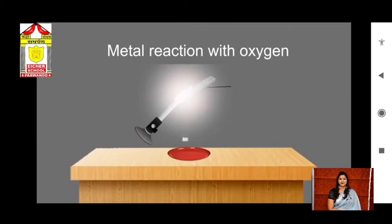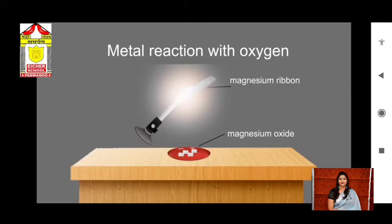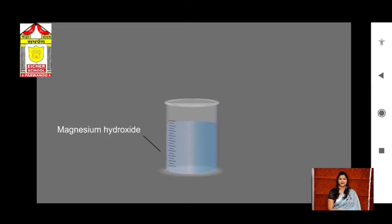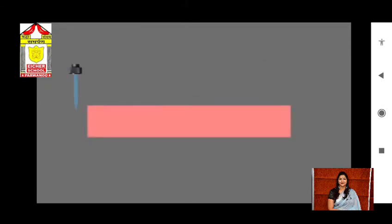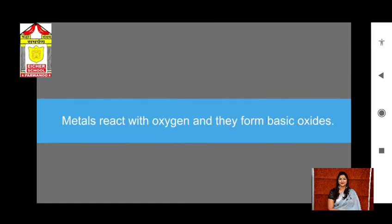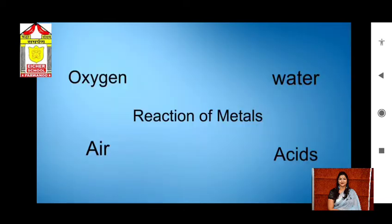When we burn magnesium ribbon in the presence of oxygen it converts into magnesium oxide. When the ashes of magnesium oxide are dissolved in water, it converts into magnesium hydroxide. We can check whether it is acidic or basic with litmus paper. The red litmus paper turns blue, showing that metals react with oxygen and form basic oxides.